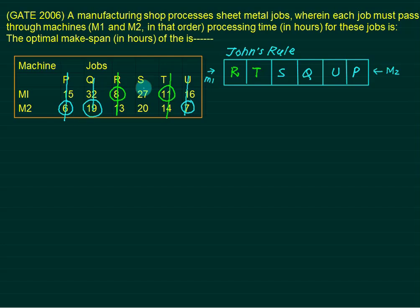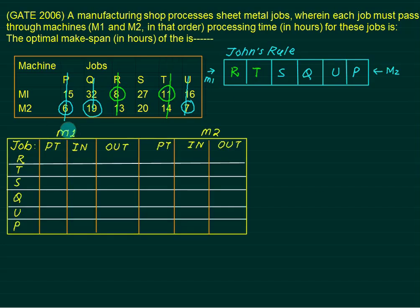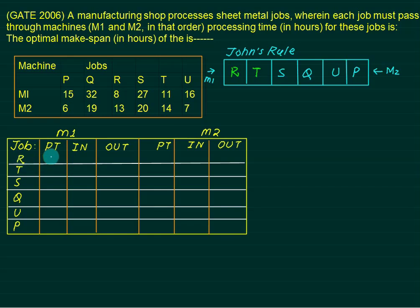Once you have the sequence, make a makespan table. One side is for M1 and the other for M2, since each job is performed on M1 first then M2. The sequence is R, T, S, Q, U, P. Processing times on M1 and M2 respectively: R is 8 and 13, T is 11 and 14, S is 27 and 20, Q is 32 and 19, U is 16 and 7, P is 15 and 6.